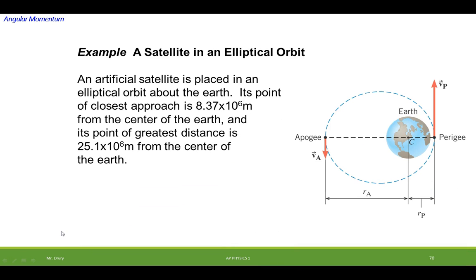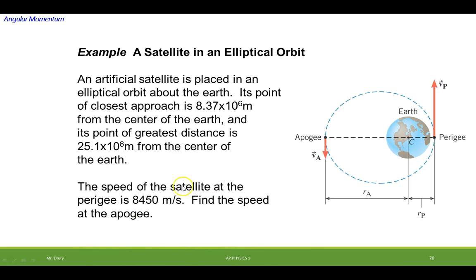Let's try a mathematical example. An artificial satellite is placed in an elliptical orbit about the Earth. Its point of closest approach is 8.37 times 10 to the 6 meters from the center of the Earth, and the point of greatest distance is 25.1 times 10 to the 6 meters from the center of the Earth. One is called the perigee, one is called the apogee. If we know the speed at the perigee to be 8450 meters per second, we want to know what the speed is at the apogee.